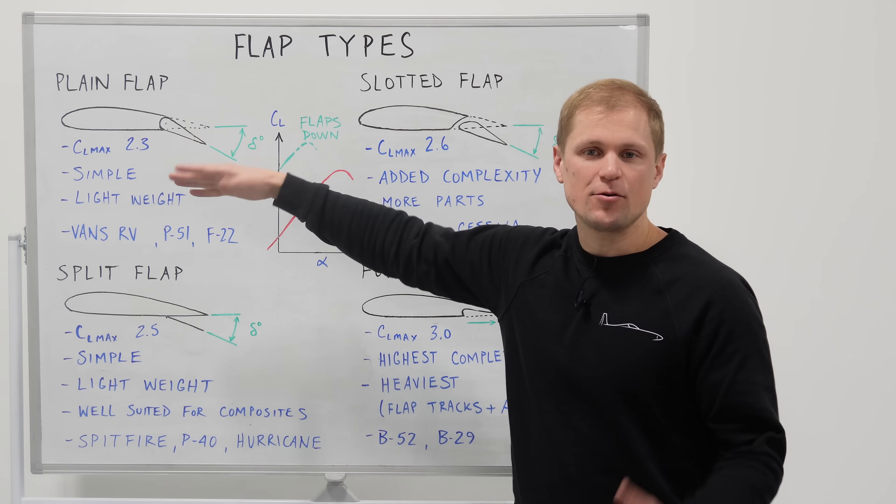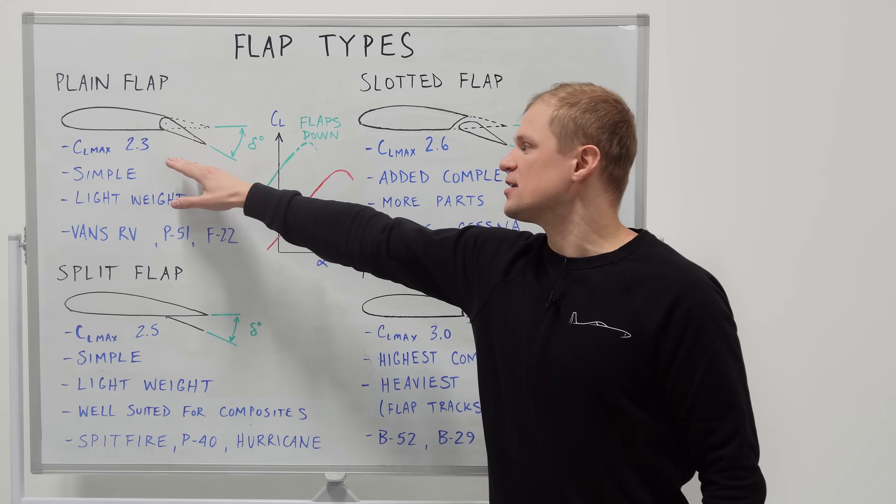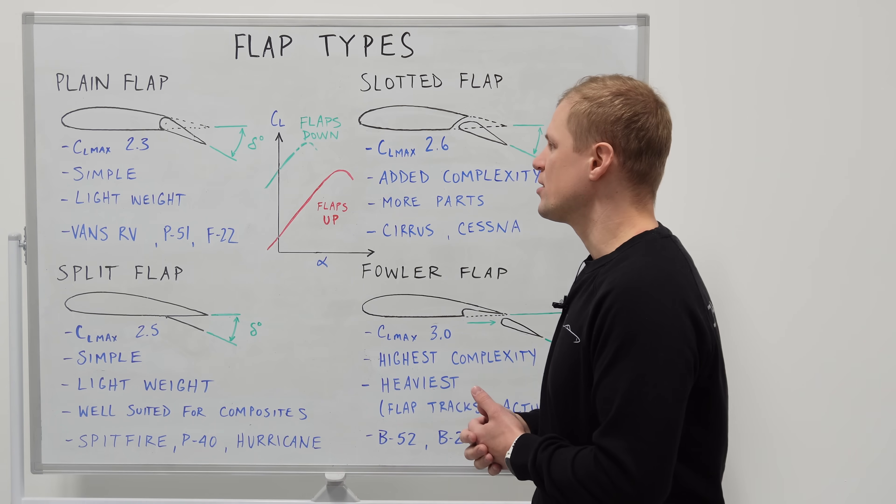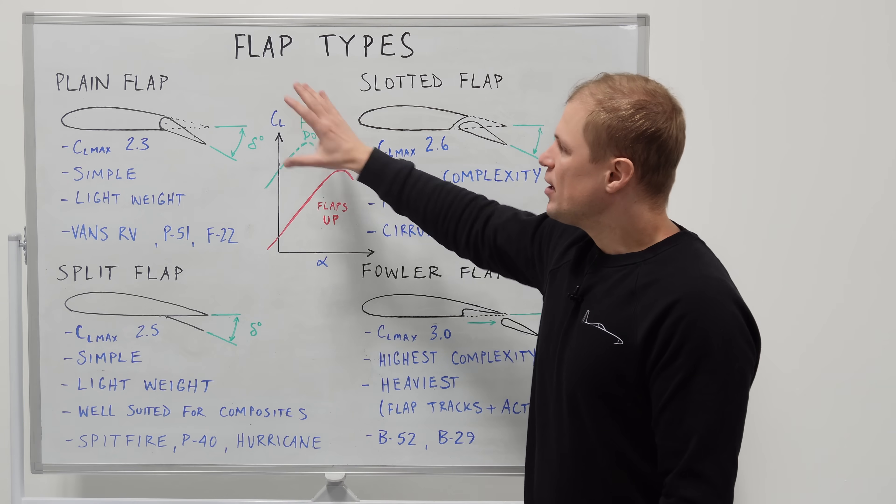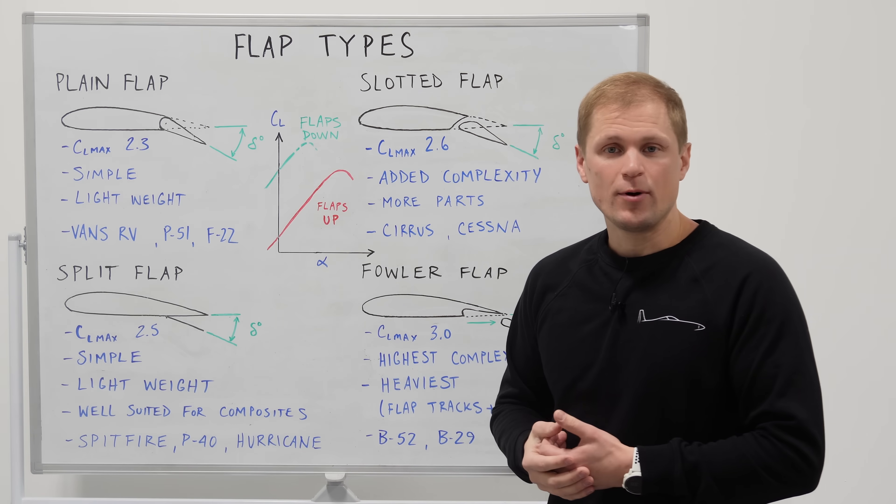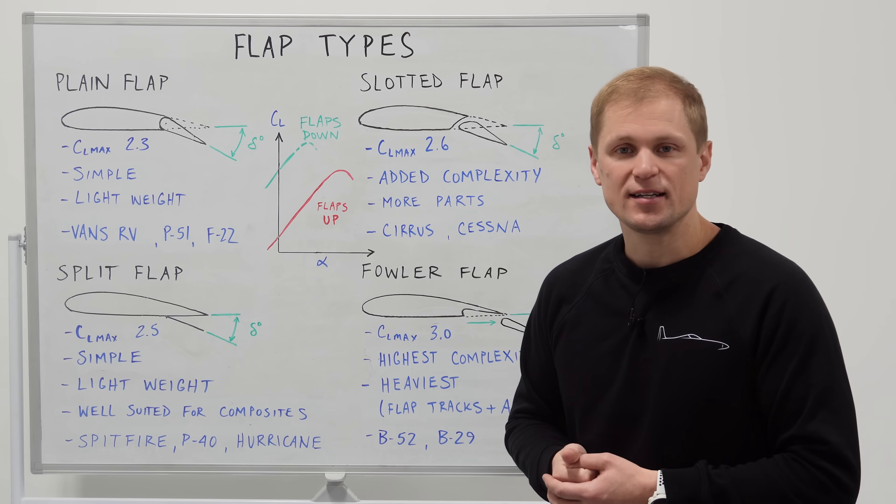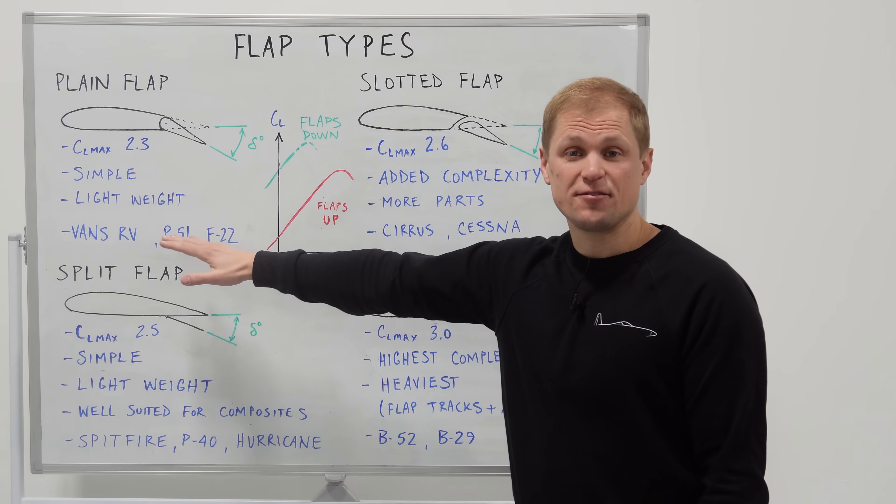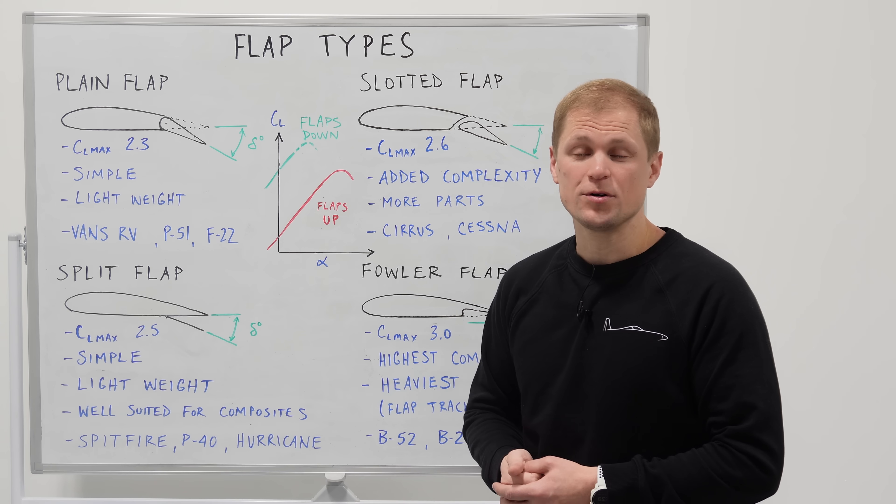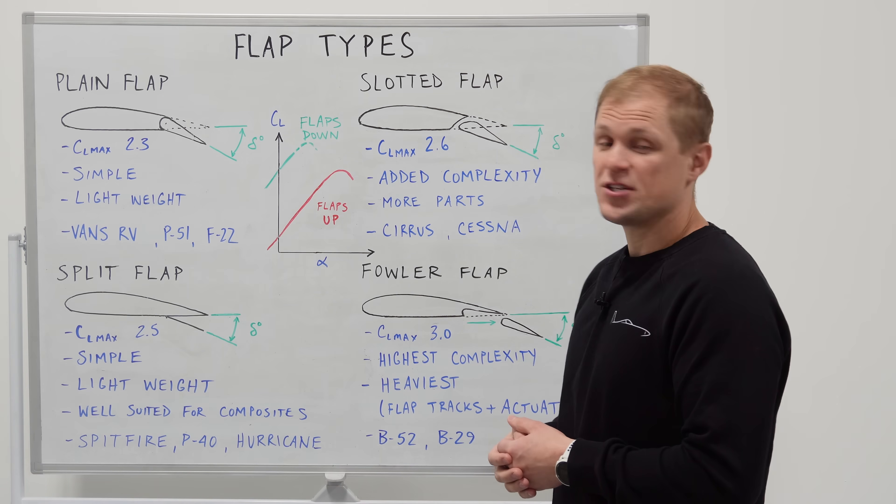So dropping the flaps increases our lift coefficient and what we really care about is the maximum lift coefficient or the CL max. So for a plain flap that we might put on the Dark Arrow 1, we could see a CL max of around 2.3. Not bad. The main appeal for the plain flap is just that it's simple and lightweight and so that's why you commonly see it on a lot of these aircraft like the Vans RVs.